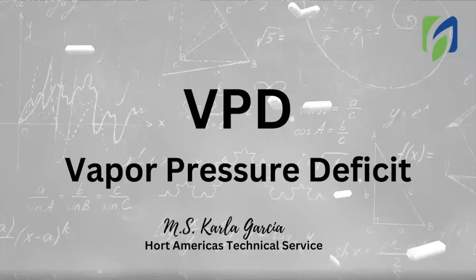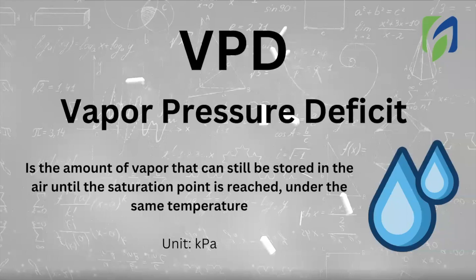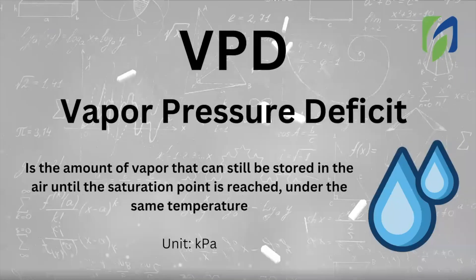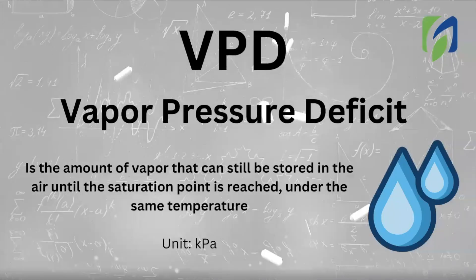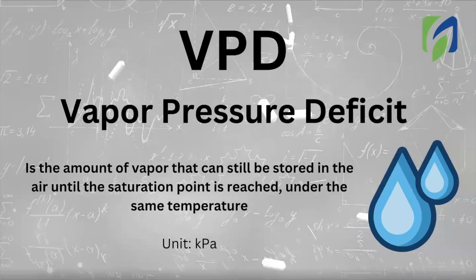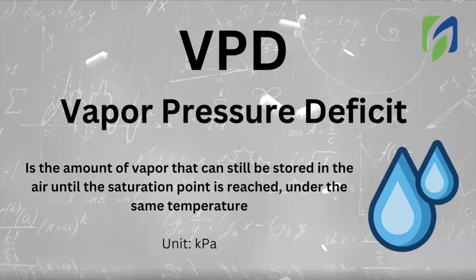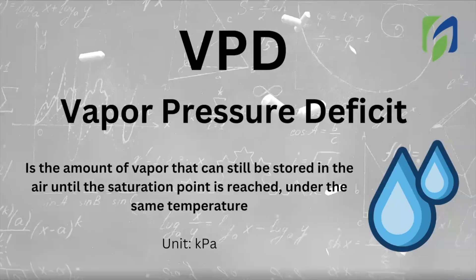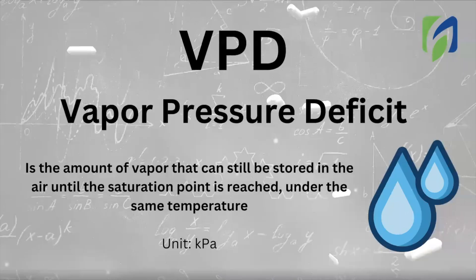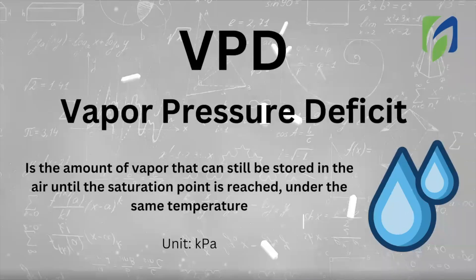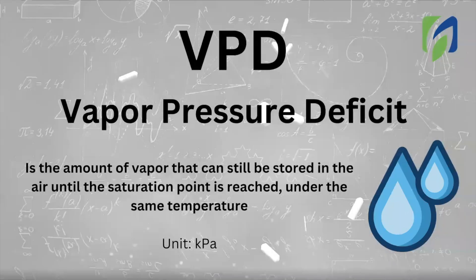VPD stands for Vapor Pressure Deficit, and is defined as the amount of vapor that can still be stored in the air before reaching saturation point. This variable is very useful and can be measured in kilopascals.